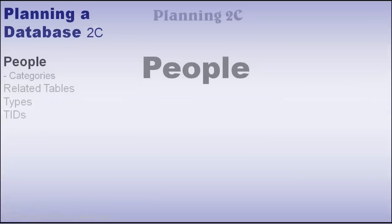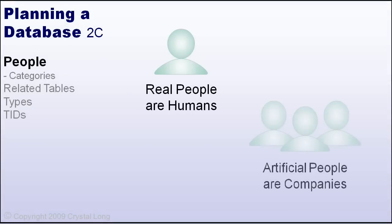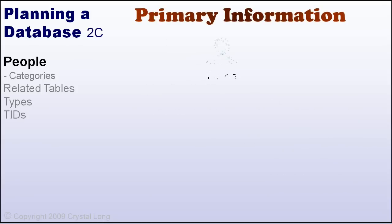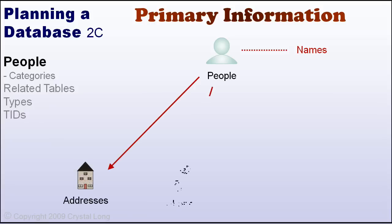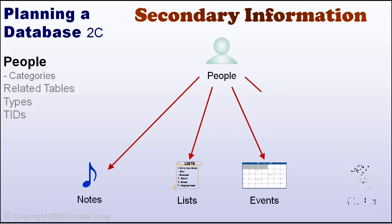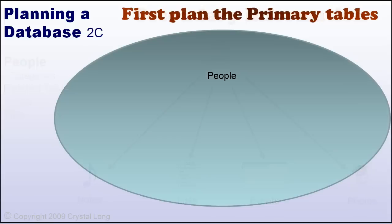There are real people and artificial people. Real people are humans. Artificial people are companies or organizations. Both have a need to keep track of the same kinds of data. The primary information is addresses, phone numbers, email addresses, and websites. The secondary information is notes, lists, events, and photos.